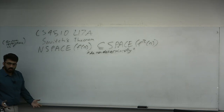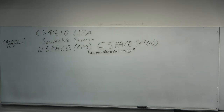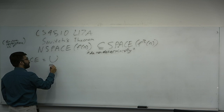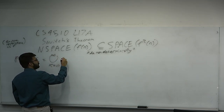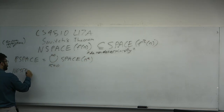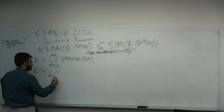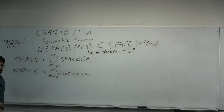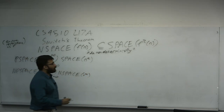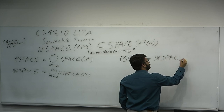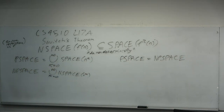This immediately proves that if you define PSPACE as the class of languages decidable in polynomial space, and NPSPACE as non-deterministic polynomial space, then Savitch's theorem immediately implies that PSPACE equals NPSPACE. PSPACE equals NPSPACE is the great corollary of Savitch's theorem.